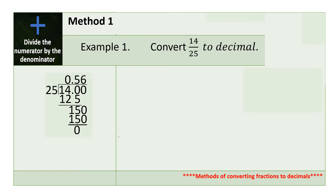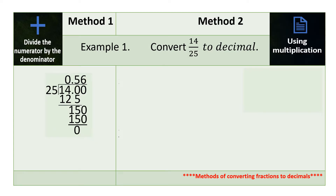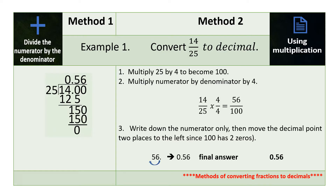Now let us use method 2, which is by using multiplication. The first thing we do is to find a number that we can multiply by the denominator of the fraction to make it 10, a hundred, a thousand, or 1 followed by zeros. Our denominator here is 25, so the number we can multiply by the denominator to become a hundred is 4. Since 4 is the number we multiply by our denominator to become a hundred, we also multiply it by our numerator. So 14 times 4 is 56, and 25 times 4 is a hundred.